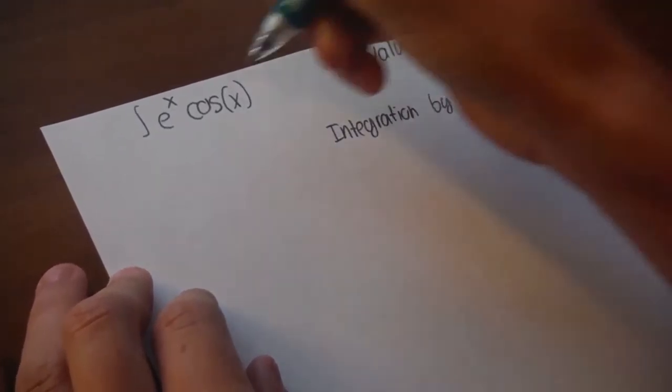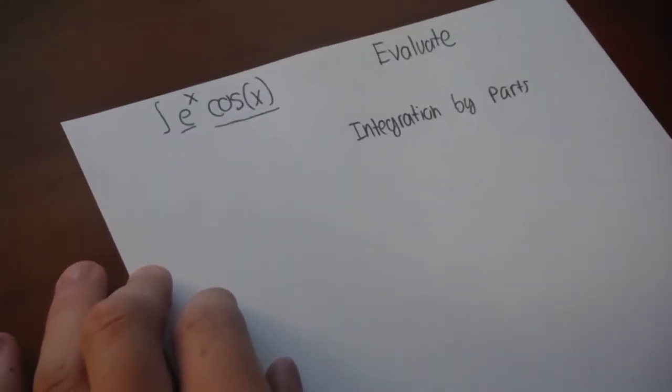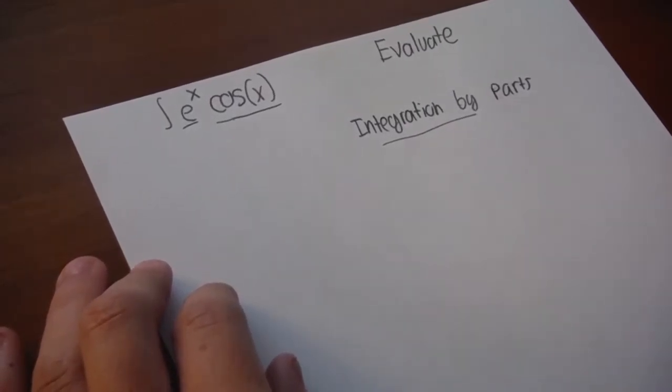meaning that e to the x and cosine of x are going to be different parts, and using this strategy we will solve them and get a final answer.